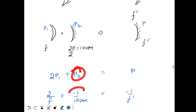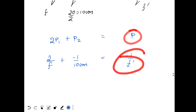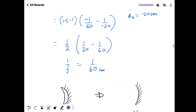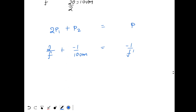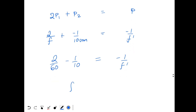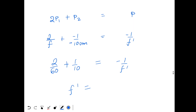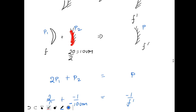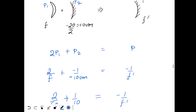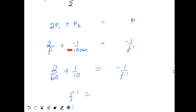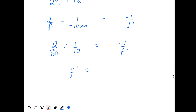Power of a mirror is minus 1 divided by focal length. So 2/F plus P2 equals minus 1/F dash. We have 1/F = 1/60 cm. The mirror is concave with focal length minus 10 cm, so P2 = minus 1/(minus 10) = plus 1/10. So: 2/60 + 1/10 = minus 1/F dash. Solving: 1/30 + 1/10 = minus 1/F dash, giving F dash = minus 60/8 = minus 7.5 cm.